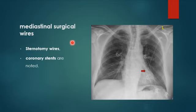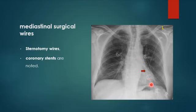This patient has mediastinal surgical wires and two radiopaque lines at the site of the left anterior descending artery through the interventricular groove — these are coronary stents.